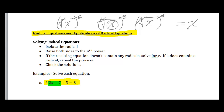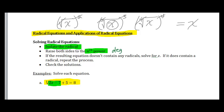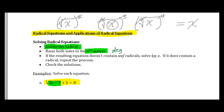Here are the steps. Before we raise anything to a power, we first have to isolate the radical — get the radical on one side completely by itself. After that, we raise both sides to the nth power, where n is the degree. So if it's a square root, raise to the second power; if it's a cube root, raise to the third power, and so on.